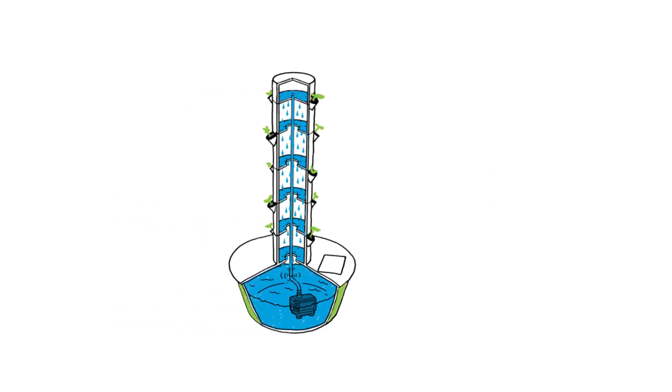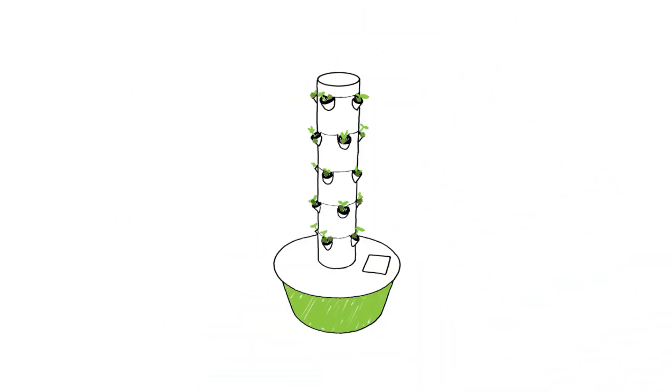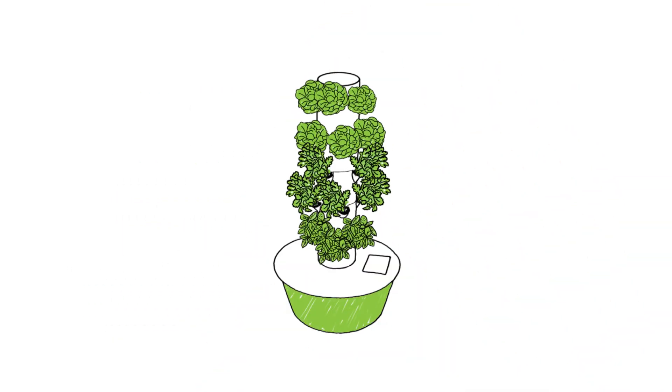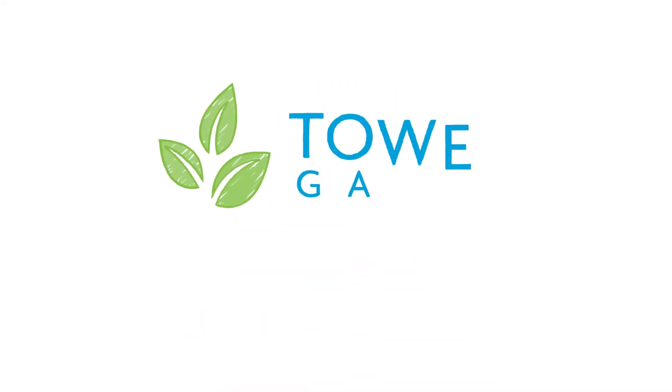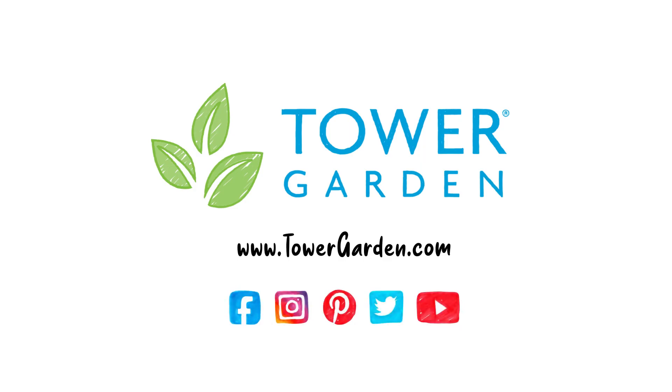This patented aeroponic process enables food crops to grow faster than they would in soil, so they can be harvested more often. And it makes Tower Garden the healthier, easier, smarter way to grow your produce.